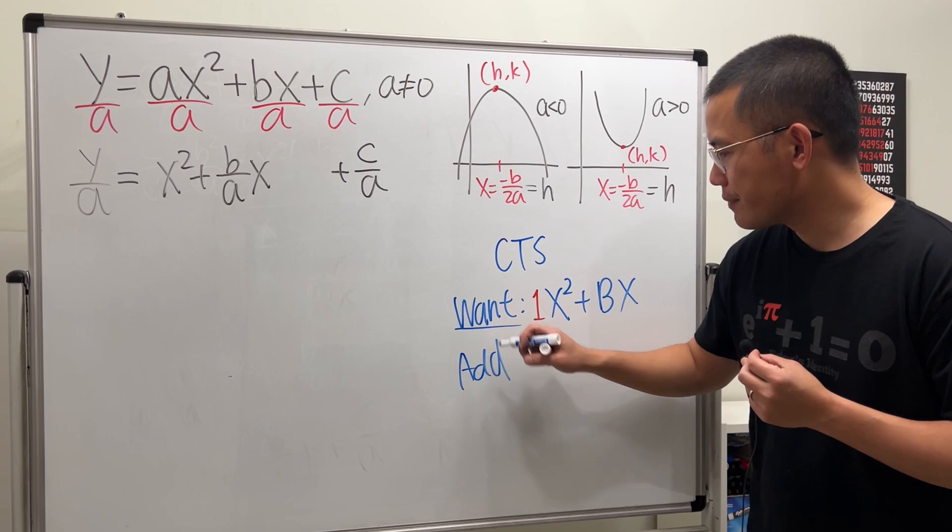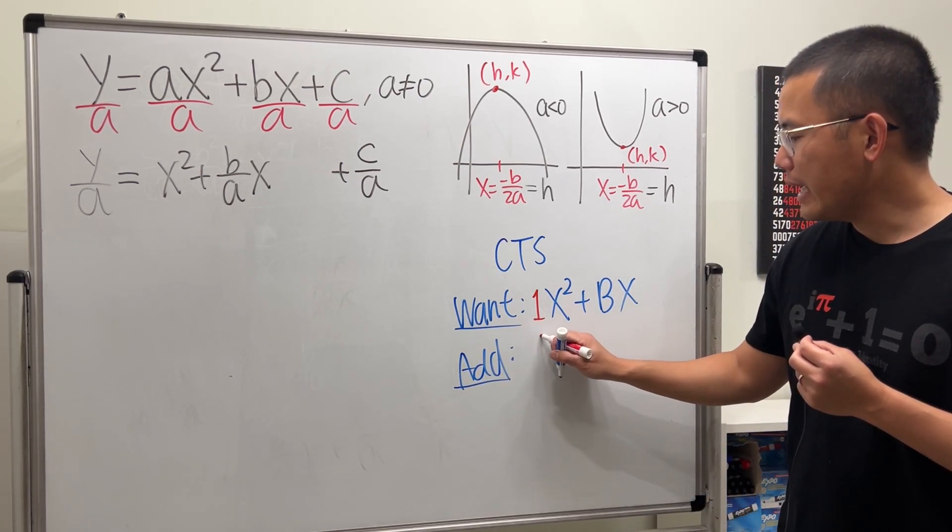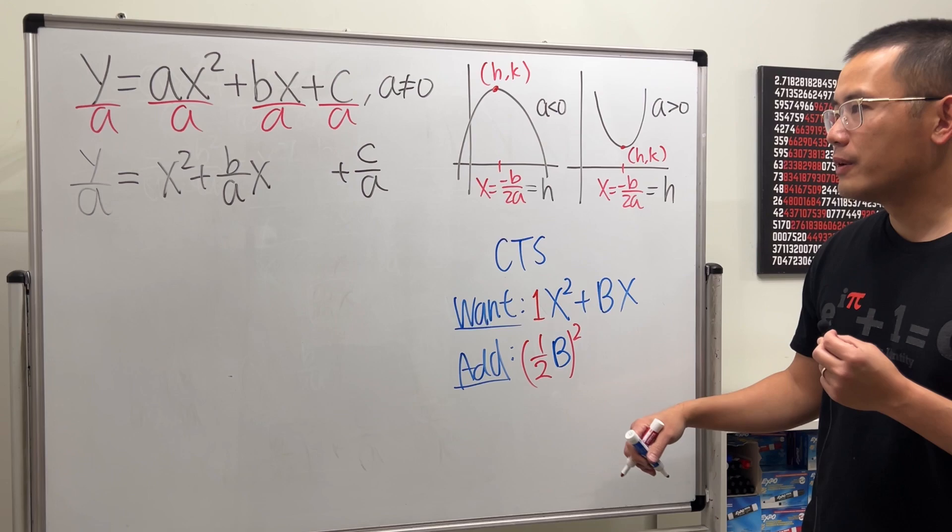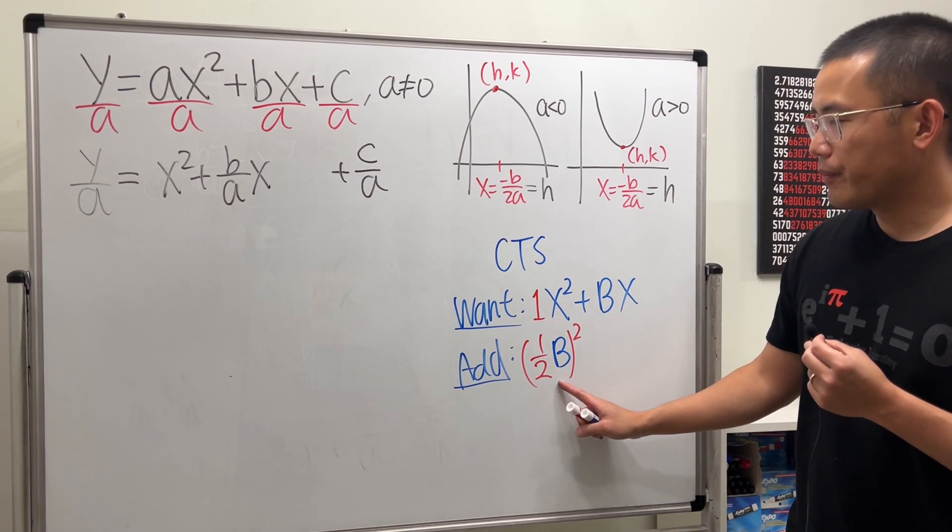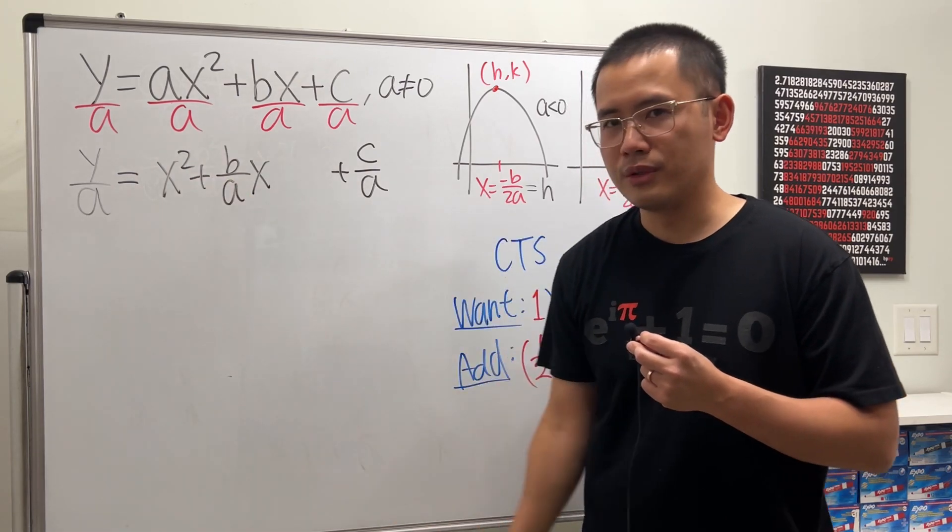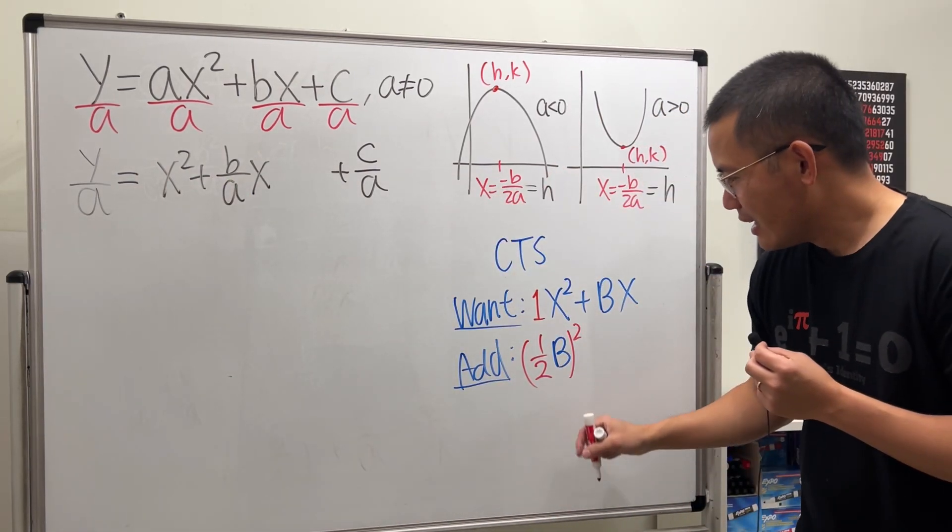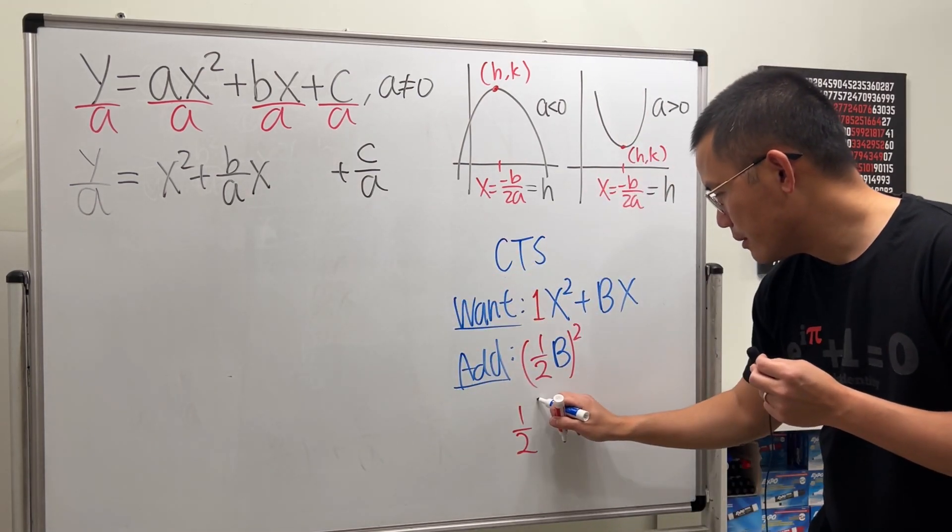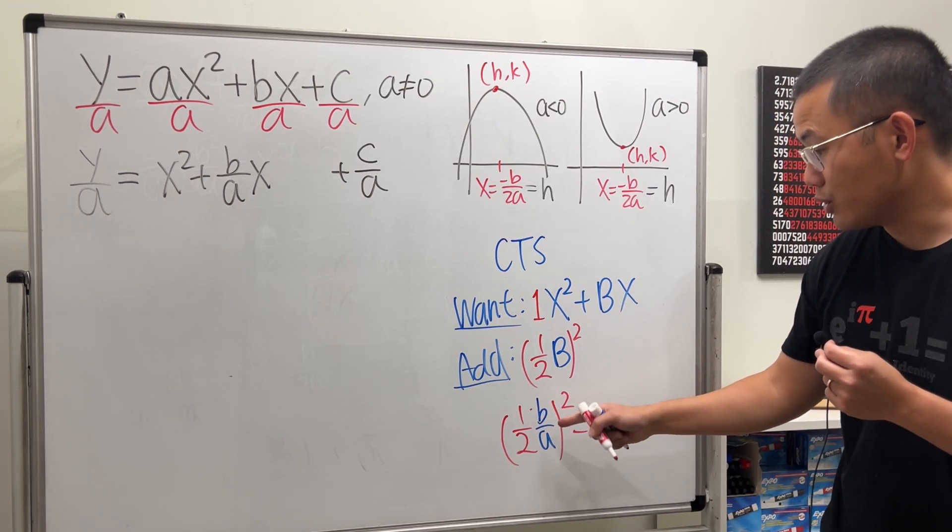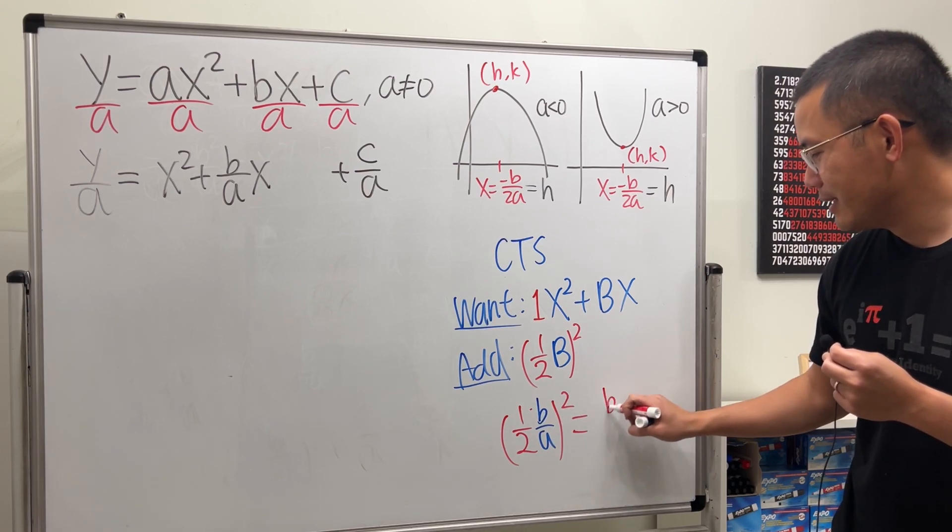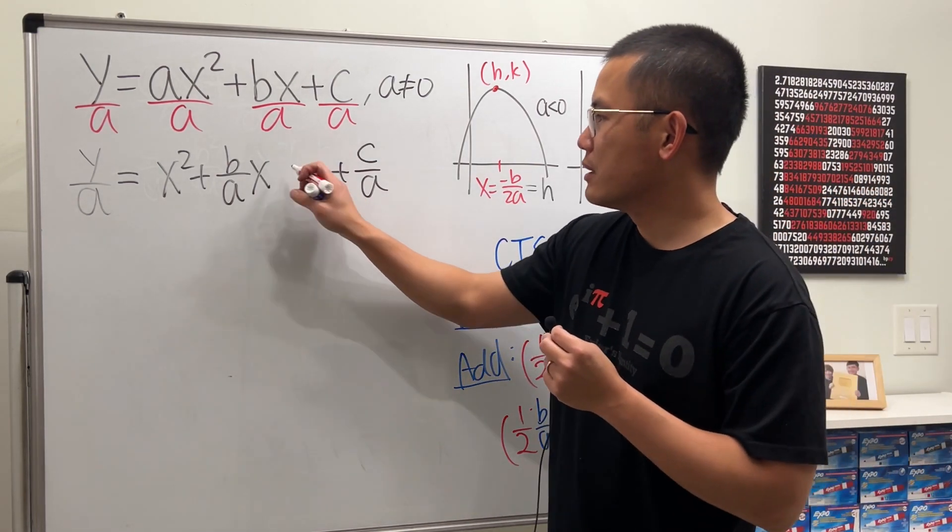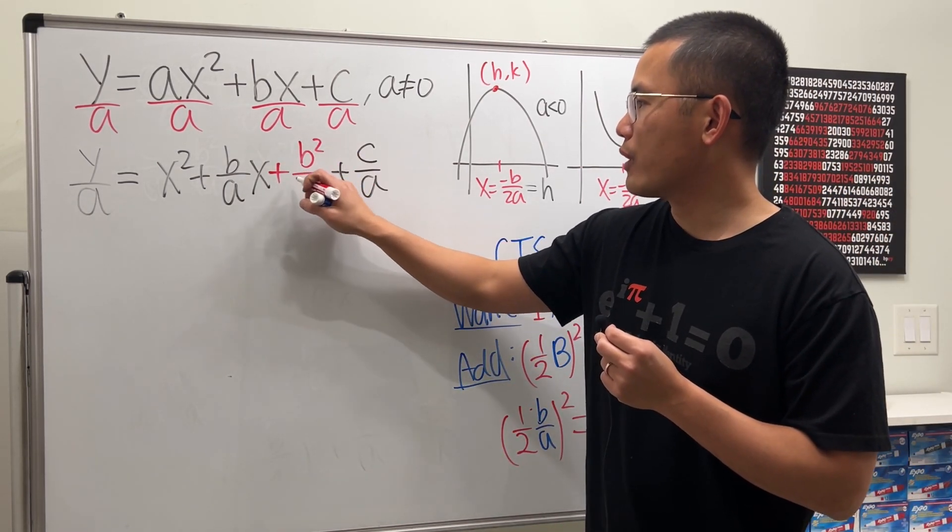Next, we are going to add here is the magic number. We are going to take one half of this coefficient and then square that. We are going to add this number so that we can complete the square. So in our case here, the coefficient is b over a. We are going to take one half of the coefficient, little b over little a, and then square that. This is b squared over 4a squared.